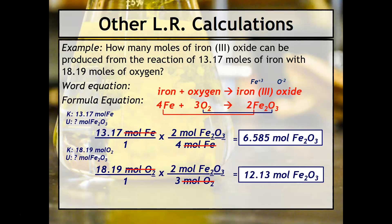Just like we talked about before, we can't produce both of these amounts. The limiting reactant is always the one that produces the smaller amount. So in this case, 6.585 is what is actually produced, and that means that iron is the limiting reactant. That's an example of a mole-mole calculation with limiting reactants.